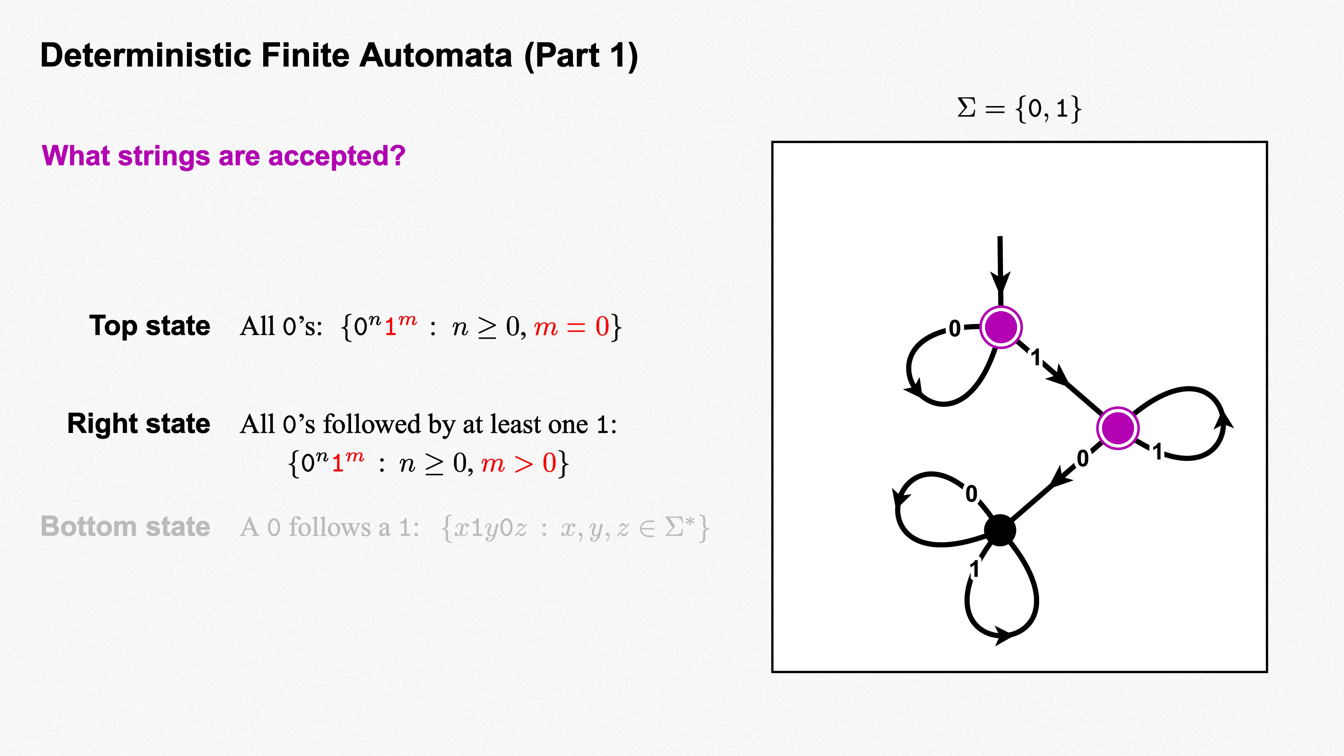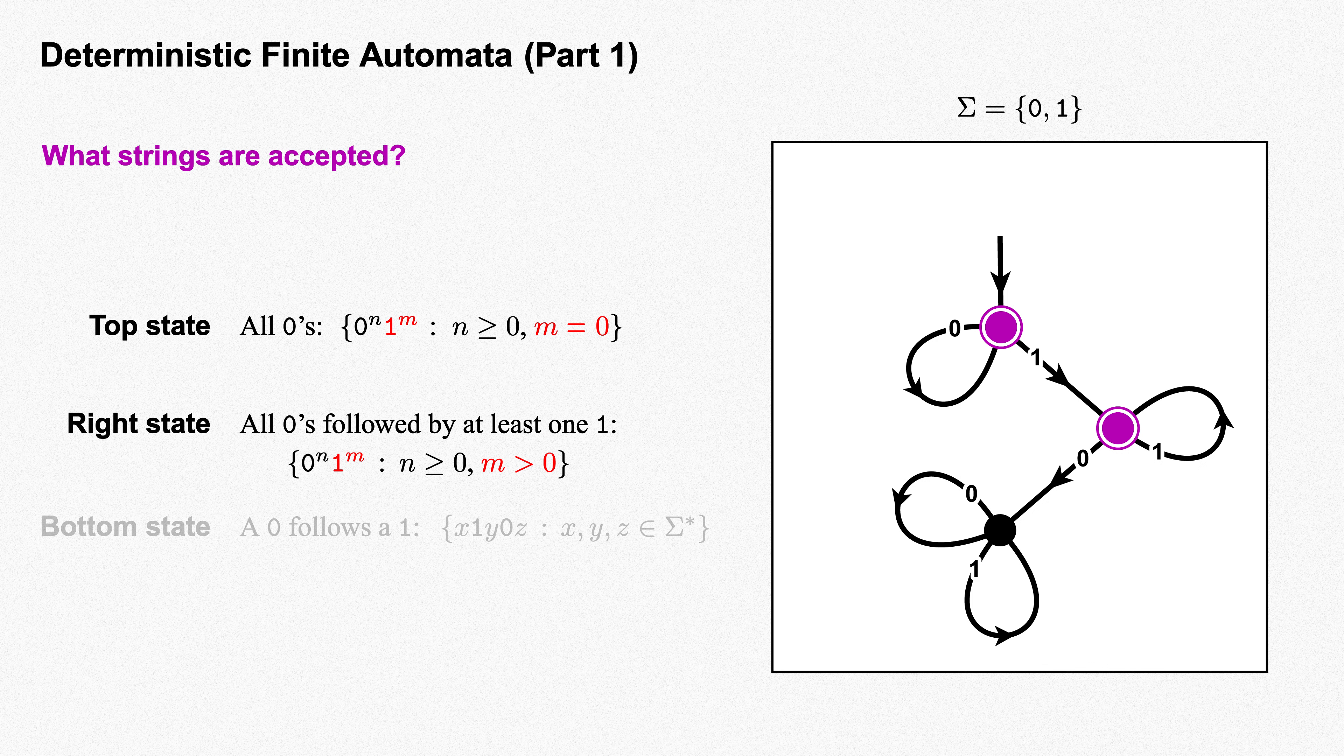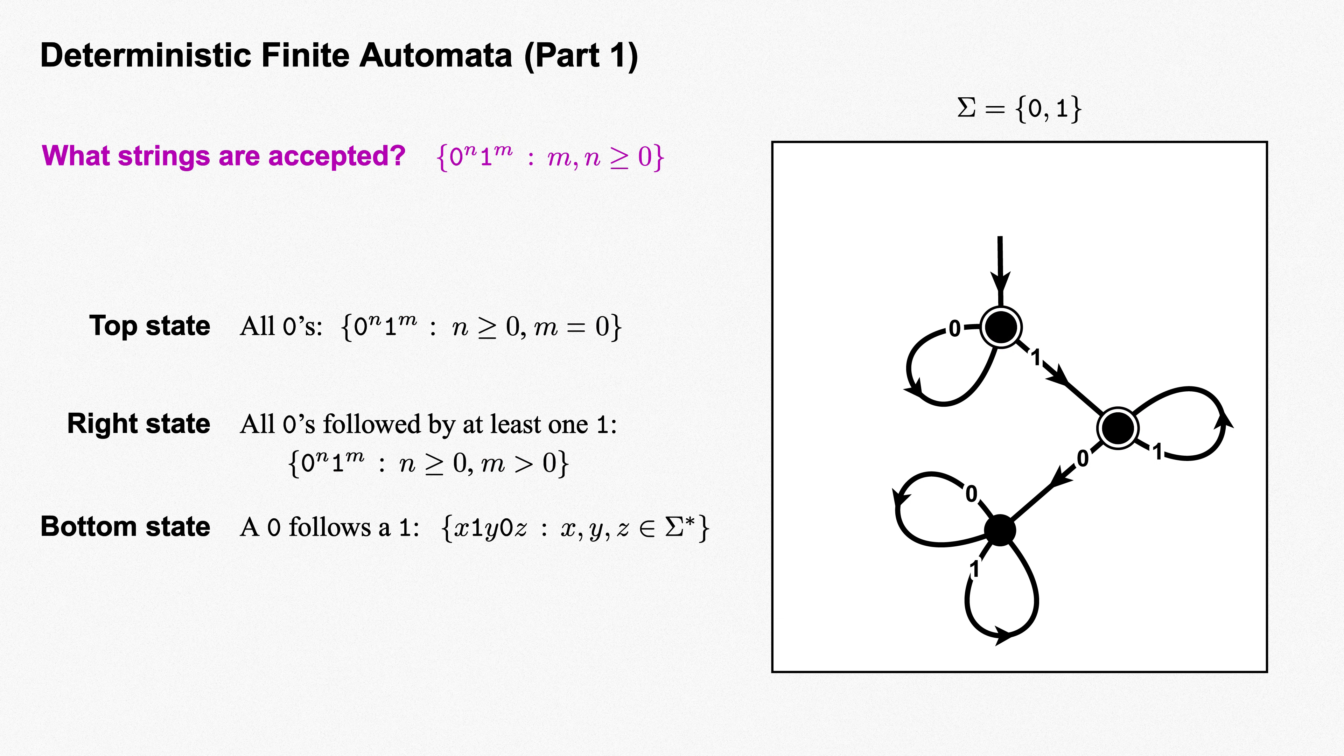We can conclude that our DFA accepts exclusively strings of the form 0^n 1^m, with m and n greater than or equal to 0. That is, some non-negative number of zeros, followed by some non-negative number of ones. In describing this DFA, we've already seen sets of strings come into play, which are next on our agenda.